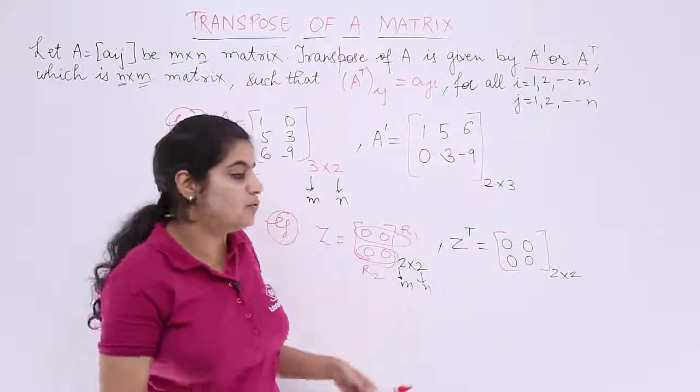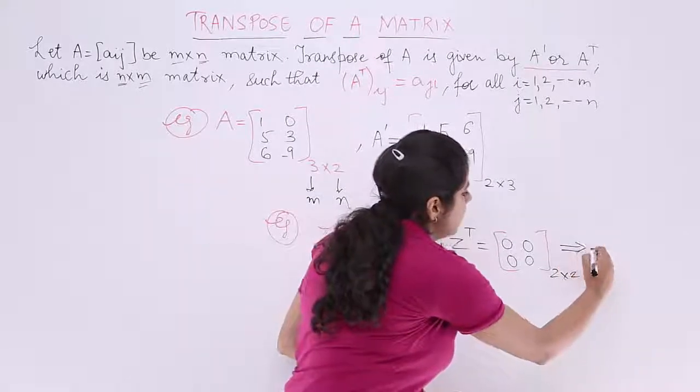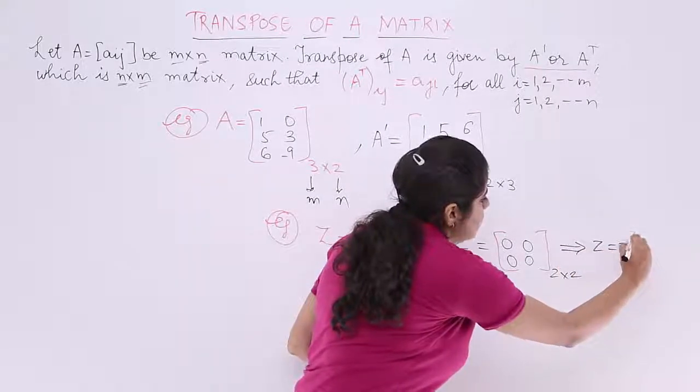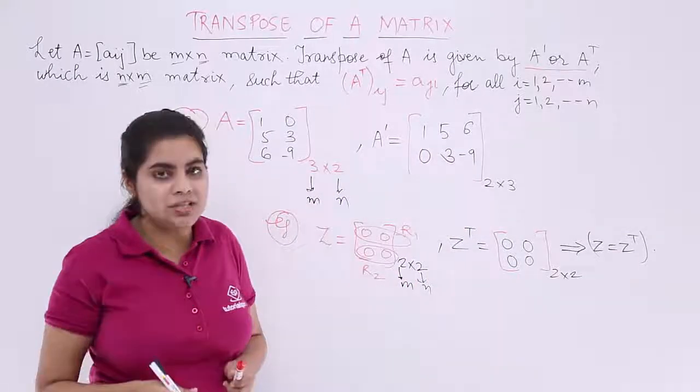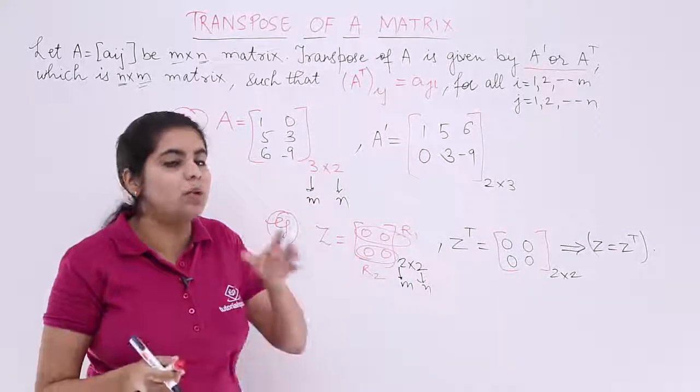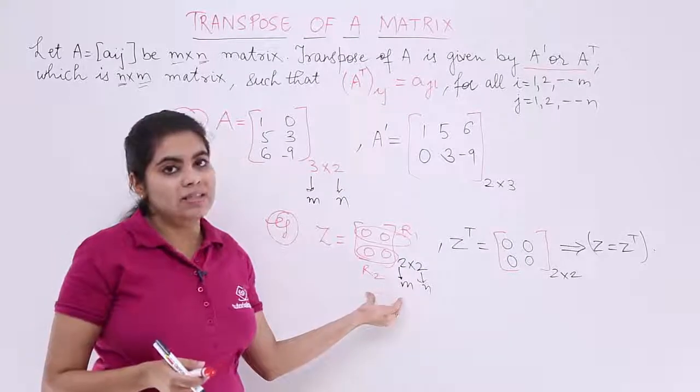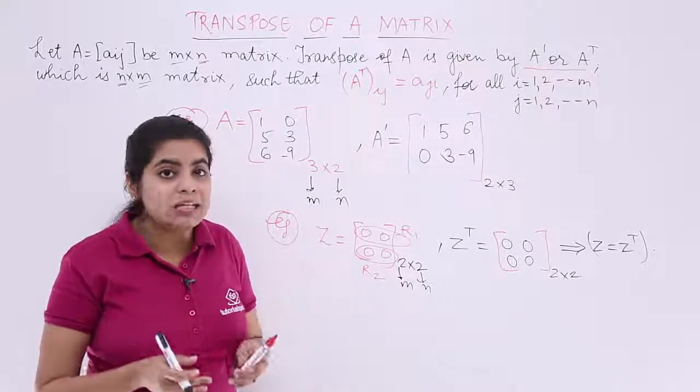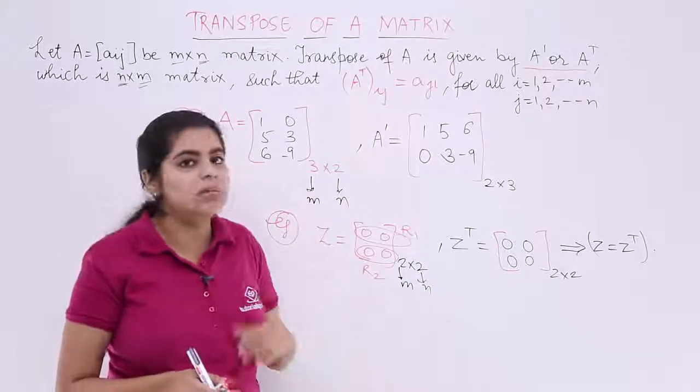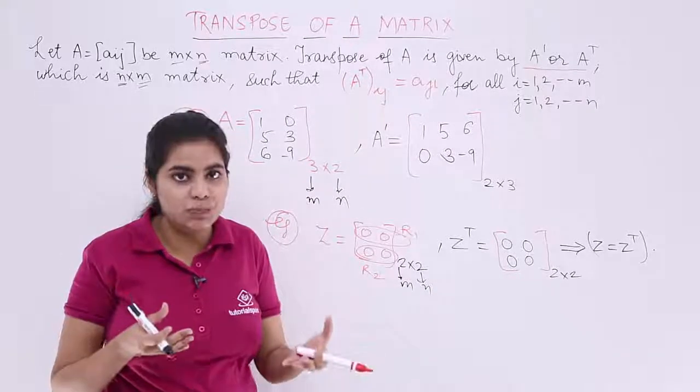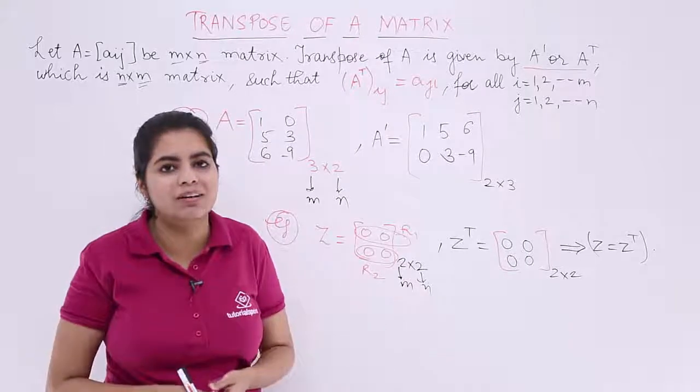So even after transpose, you find that the things are same. So Z is equal to Z transpose. When is the given matrix equal to its transpose? This is very important: when all elements are same and the order is such that it is a square matrix. Then it happens that both the matrices have same transpose and the matrix itself - both are same.